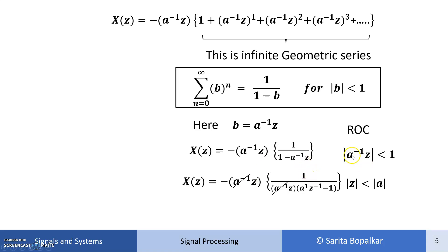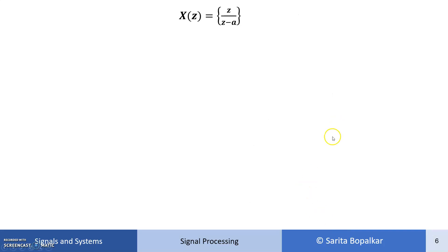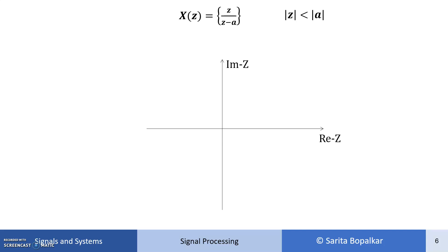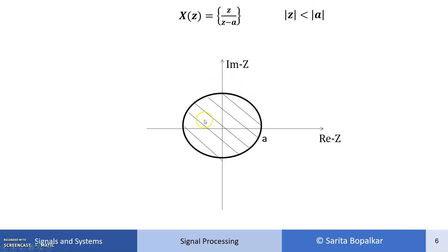And what is our ROC? Here, from the condition mod of a raised to minus 1 times Z less than 1, we get mod z less than mod a. Taking the minus inside, we get X of Z equal to Z upon Z minus a, where mod z is less than mod a is our ROC. To draw it graphically in the Z domain with real and imaginary axes, we draw the circle of radius a. The ROC is the interior part of the circle where mod z is less than a, meaning X of Z is finite for all values of z inside the circle.